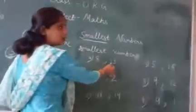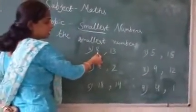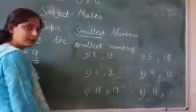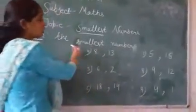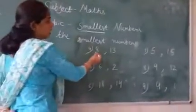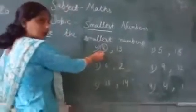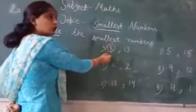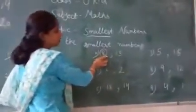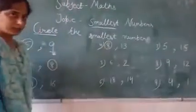Fourth one is 8 and 13. Our numbers are 8 and 13. In the same way, when we count from 1 to 13, we know that 8 comes before 13. So, 8 is smaller than 13.